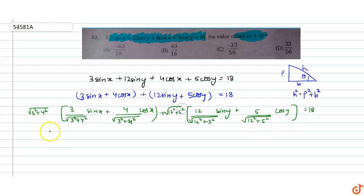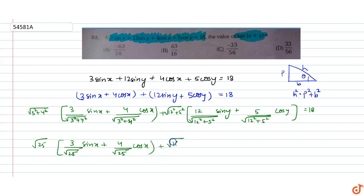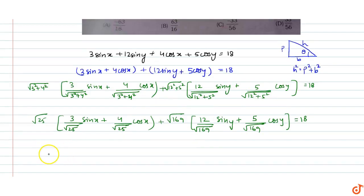तो यह हमें मिलेगा: √25 · (3/√25 · sinx + 4/√25 · cosx) + √169 · (12/√169 · siny + 5/√169 · cosy) = 18. That gives us: 5 · (4/5 · cosx + 3/5 · sinx) + 13 · (5/13 · cosy + 12/13 · siny) = 18.